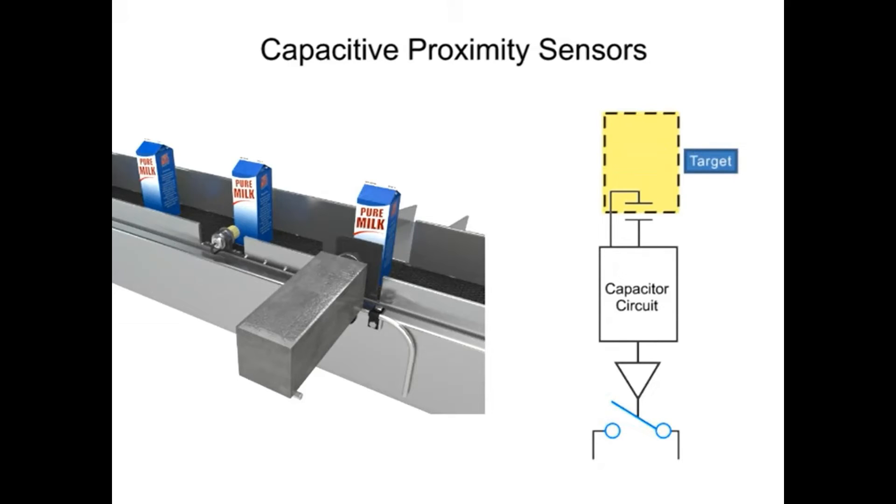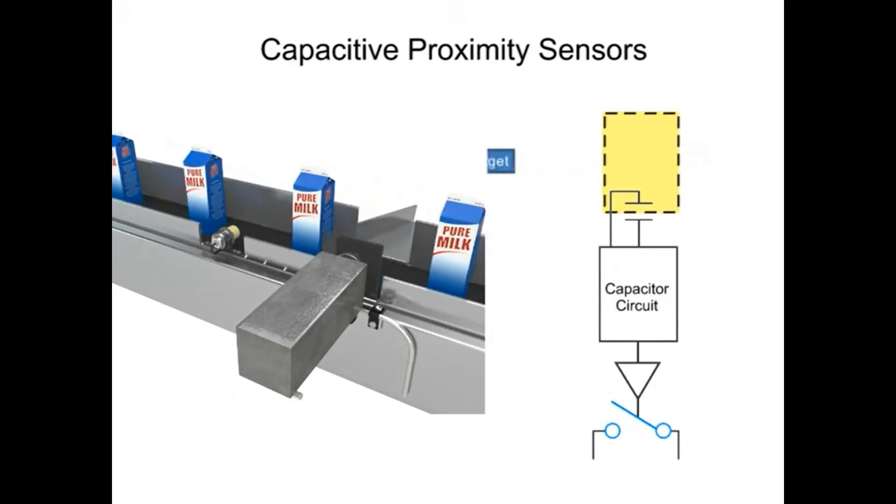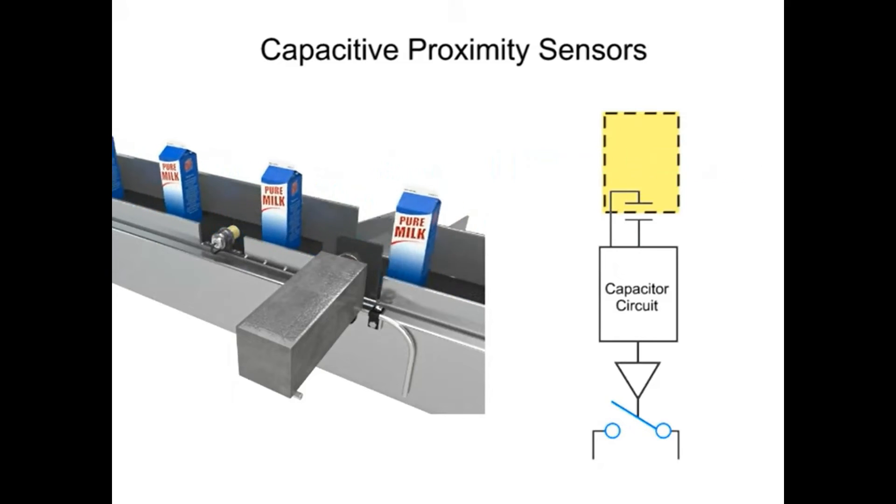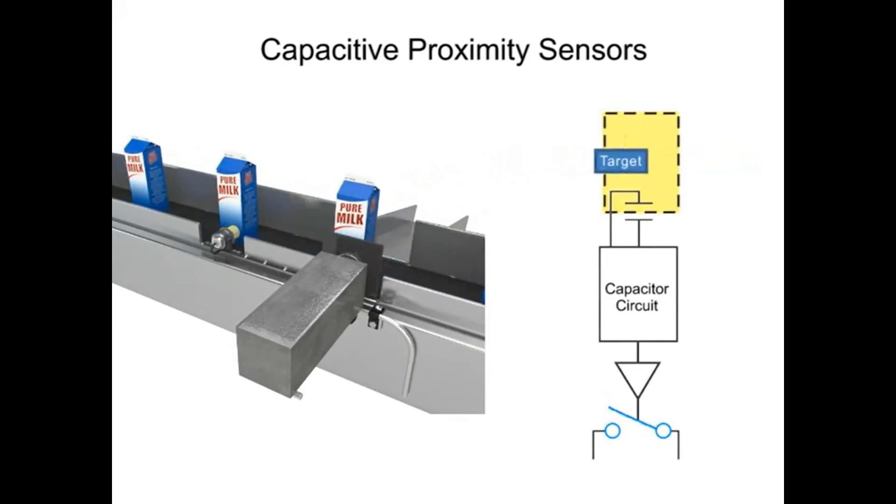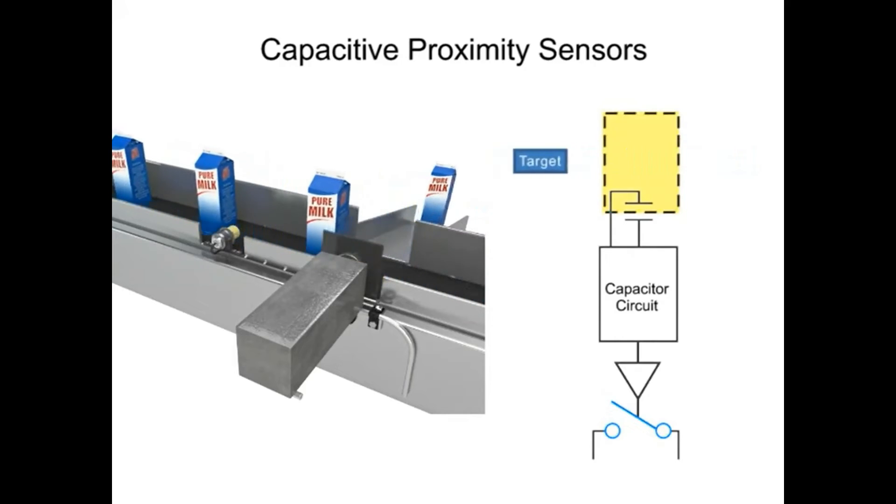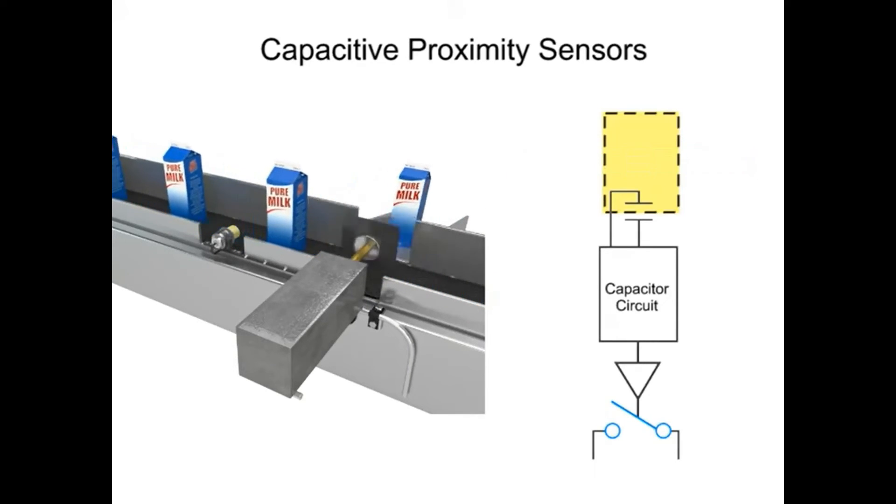In this example, if liquid is detected in the milk carton, the pusher device allows the milk to pass through. If no contents are detected, the pusher device rejects it and sends it to a different location.